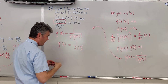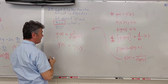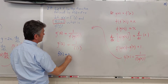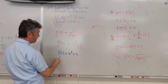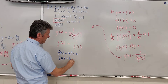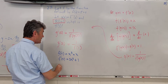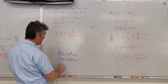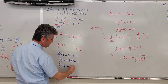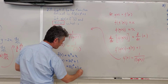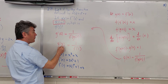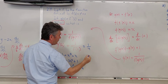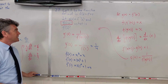To find f prime of 1, we are told that f of x equals x cubed plus x, so f prime of x is 3x squared plus 1. Therefore f prime of 1 is 3 times 1 squared plus 1, which equals 4. So g prime of 2 equals 1 over f prime of 1, which equals 1 over 4. And that's the end of this question.